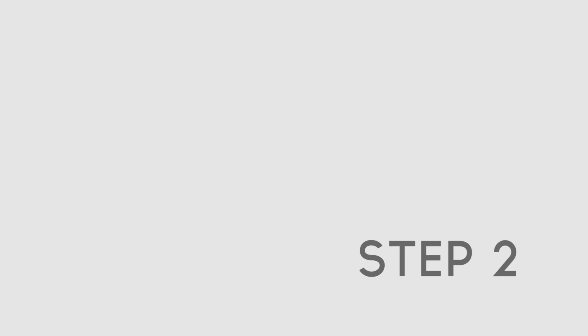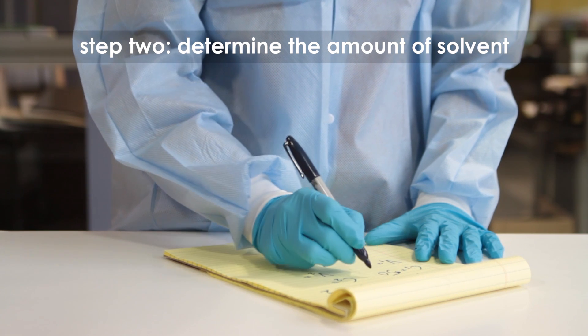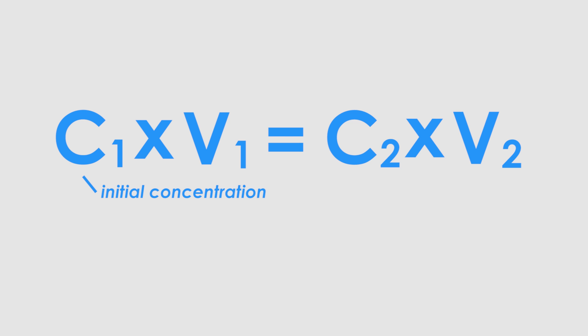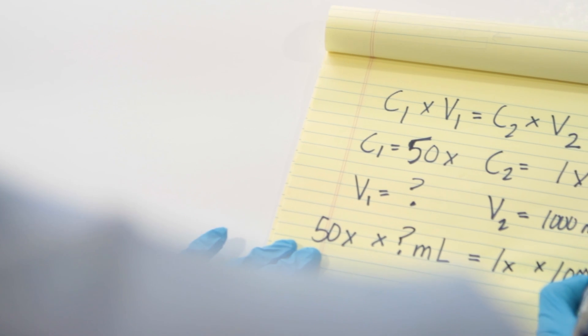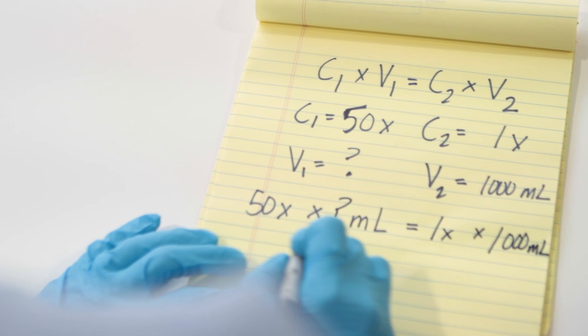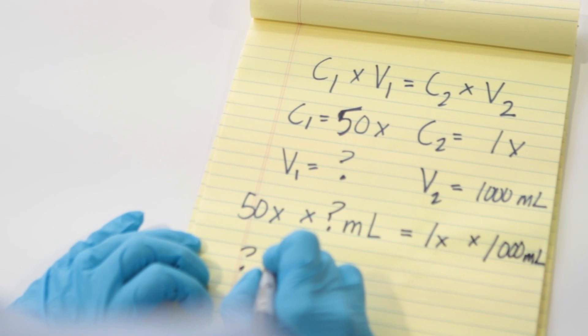Step 2. Determine the amount of solvent using the simple dilution formula C1 times V1 equals C2 times V2, where C1 is the initial concentration, V1 is the initial volume, and C2 and V2 are the final concentration and volume, respectively. In this equation, we will simply plug in the known quantities and solve.